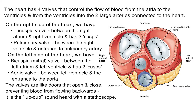On the left side of the heart, we have the bicuspid or mitral valve, which is between the left atrium and left ventricle and has two cusps. We also have the aortic valve between the left ventricle and the entrance to the aorta. The valves are like doors that open and close, preventing blood from flowing backwards — it is the lub-dub sound heard with a stethoscope.